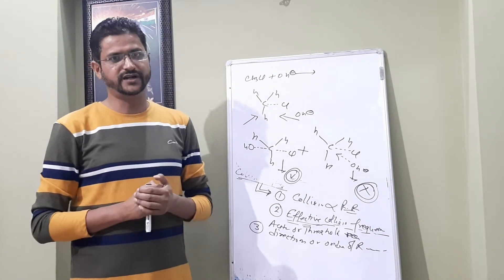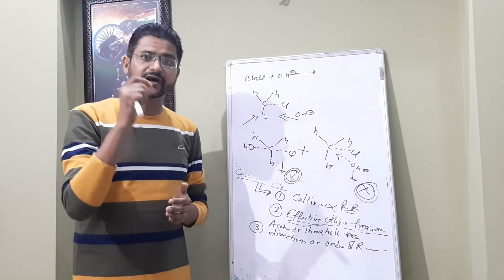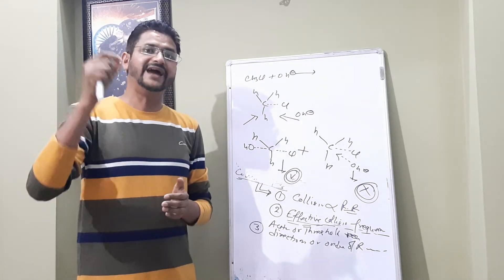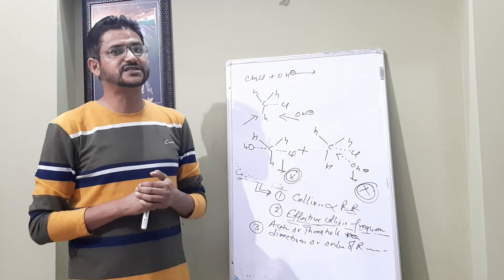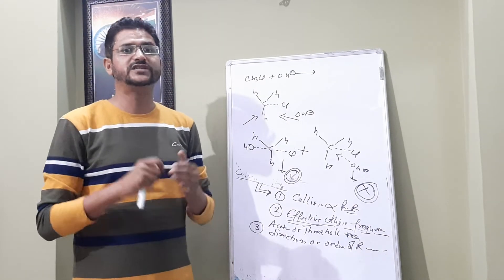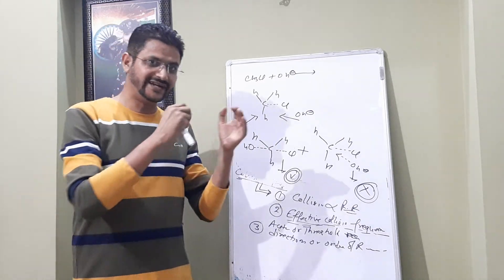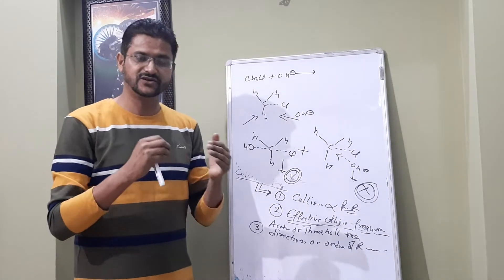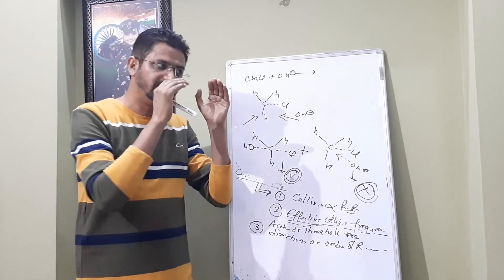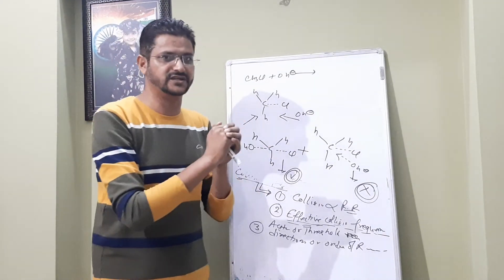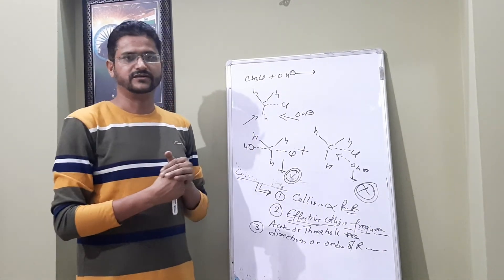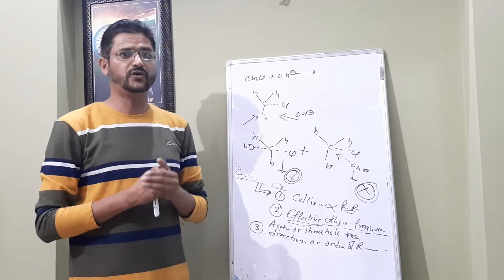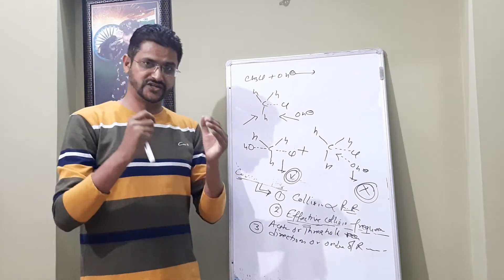To summarize: collision frequency is an important term — it means the number of collisions between reactant molecules at normal temperature and pressure in unit time. Effective collision frequency means collisions between those reactant molecules which have at least activation energy, at normal temperature and pressure in unit time. The third factor is proper direction or orientation — for example, from the back side in SN2 reactions. This completes the topic of how pressure increases the rate of reaction.